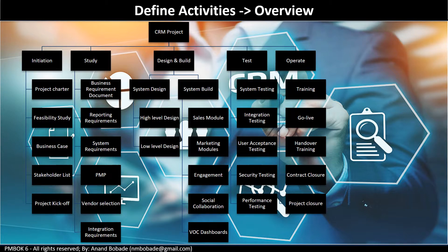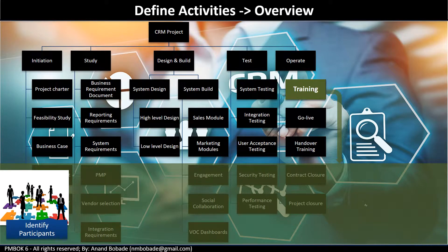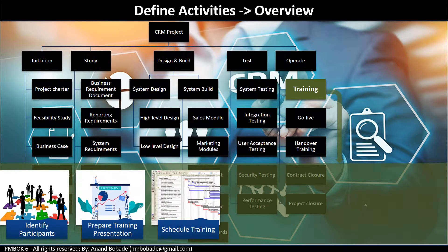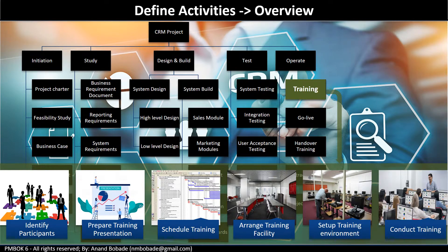Let's take the work package 'training.' Remember, training as a work package has a tangible value to the organization, and sometimes this work package can even be outsourced. The activities needed to complete the training work package are: identify participants for the training, prepare training presentation, schedule training, arrange training facility, set up training enrollment, and conduct training. All these will be activities to be executed to complete the training work package. Right now, we are not worried about the order of these activities.